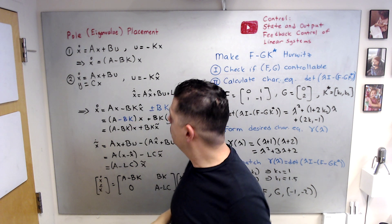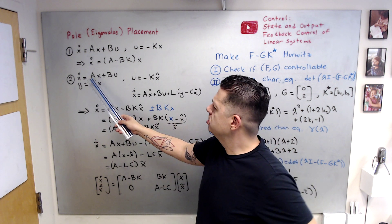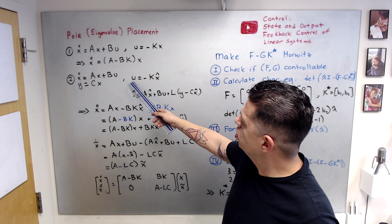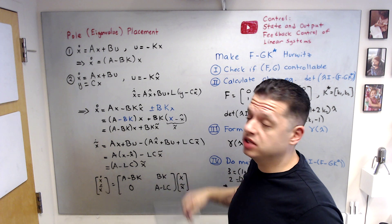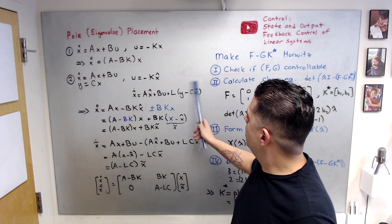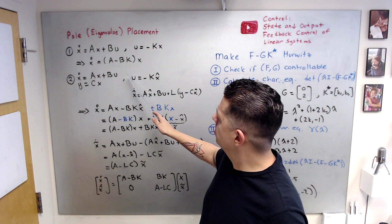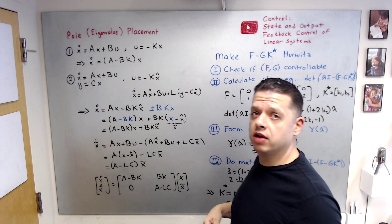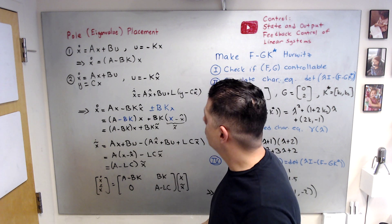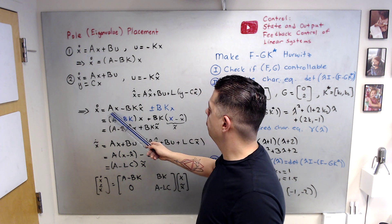For the second example, suppose states are not available, so we need to use output. We have x_dot = Ax + Bu and y = Cx. The stabilization controller is u = -Kx_hat, since we don't know x and need to estimate it. Here is our Luenberger observer: x_hat_dot = Ax_hat + Bu + L(y - Cx_hat). To find the closed-loop system, we start with x_dot = Ax + Bu and plug in the controller: x_dot = Ax - BKx_hat.